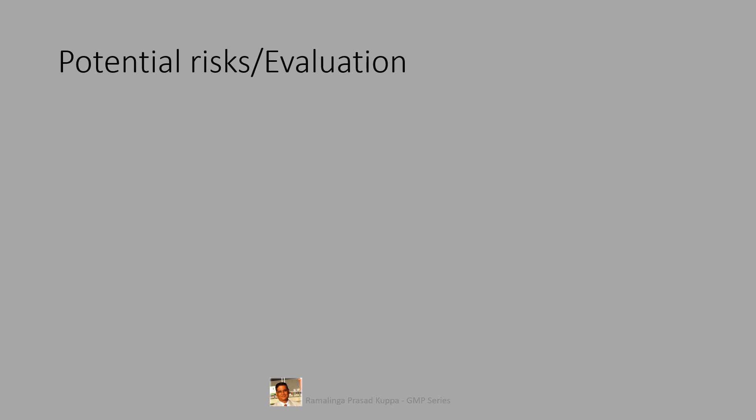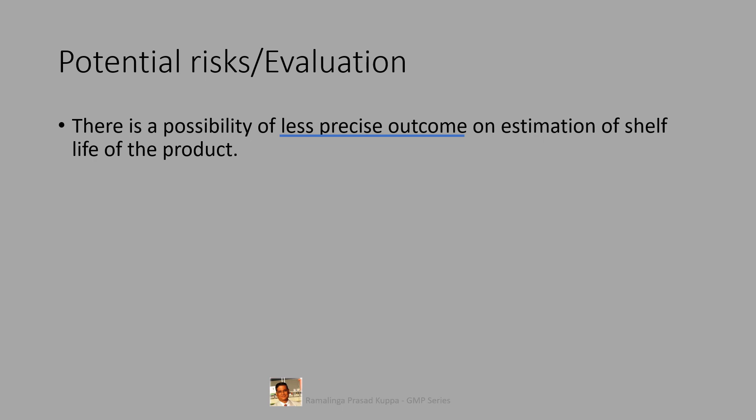Let us look into other potential risks and evaluation. There is a possibility of less precise outcome on estimation of shelf life of the product. Guideline says that due to the reduced amount of data collected in the matrixing design on factors other than time points generally has less precision in shelf life estimation and can lead to shorter shelf life than the corresponding full design.